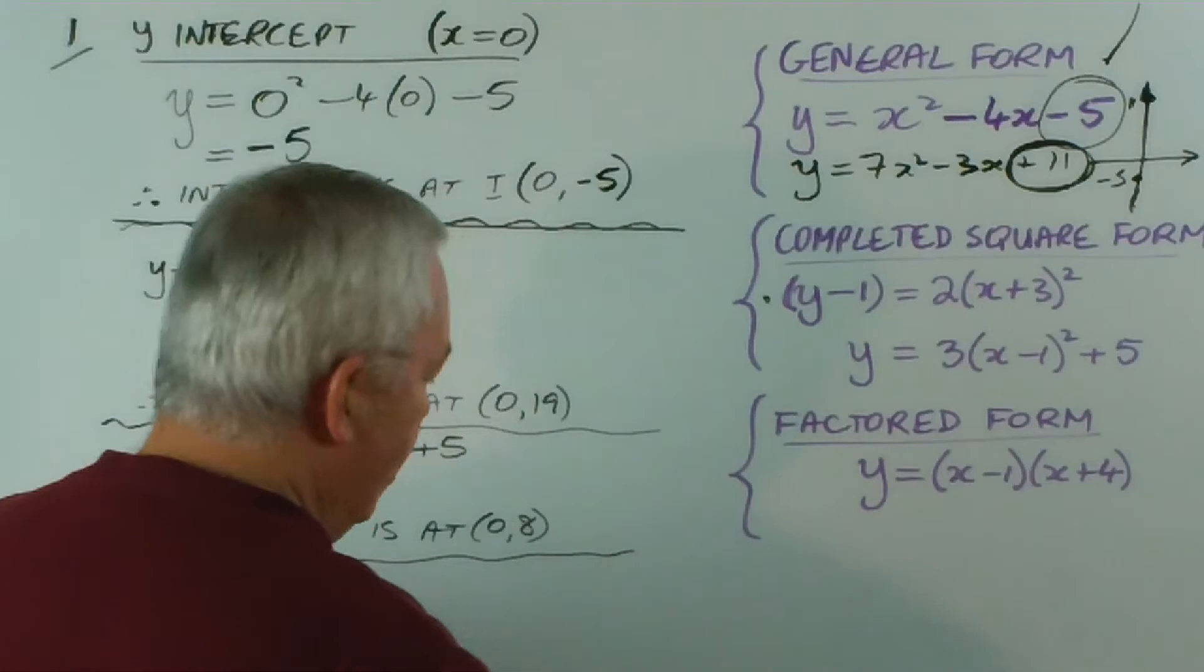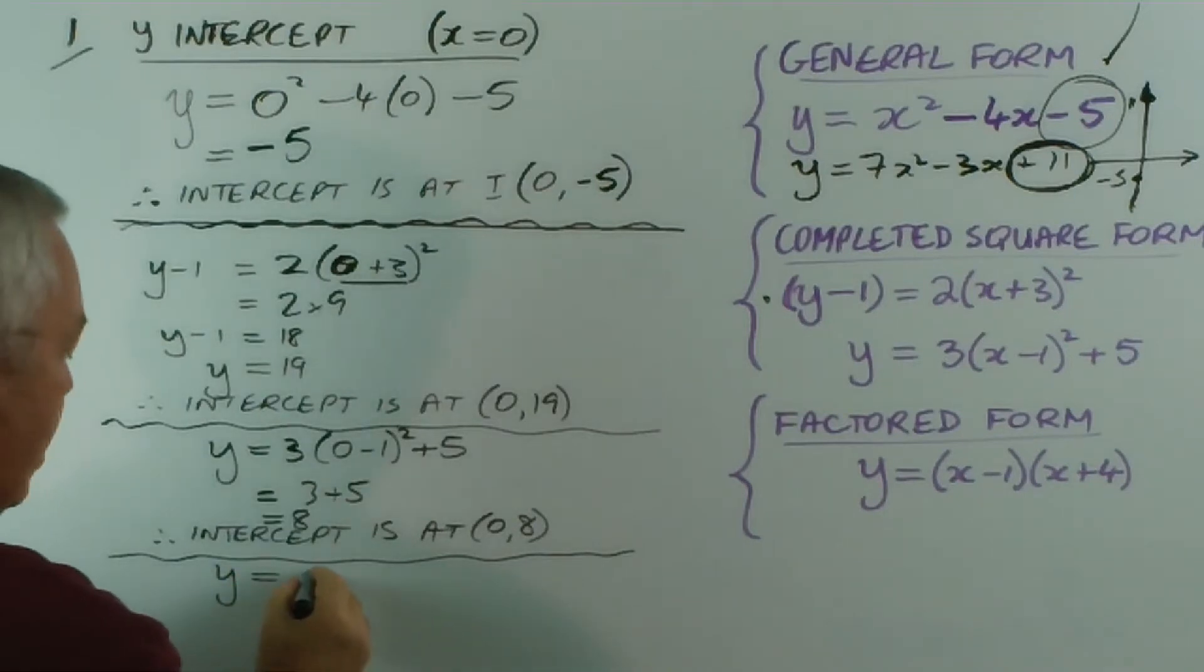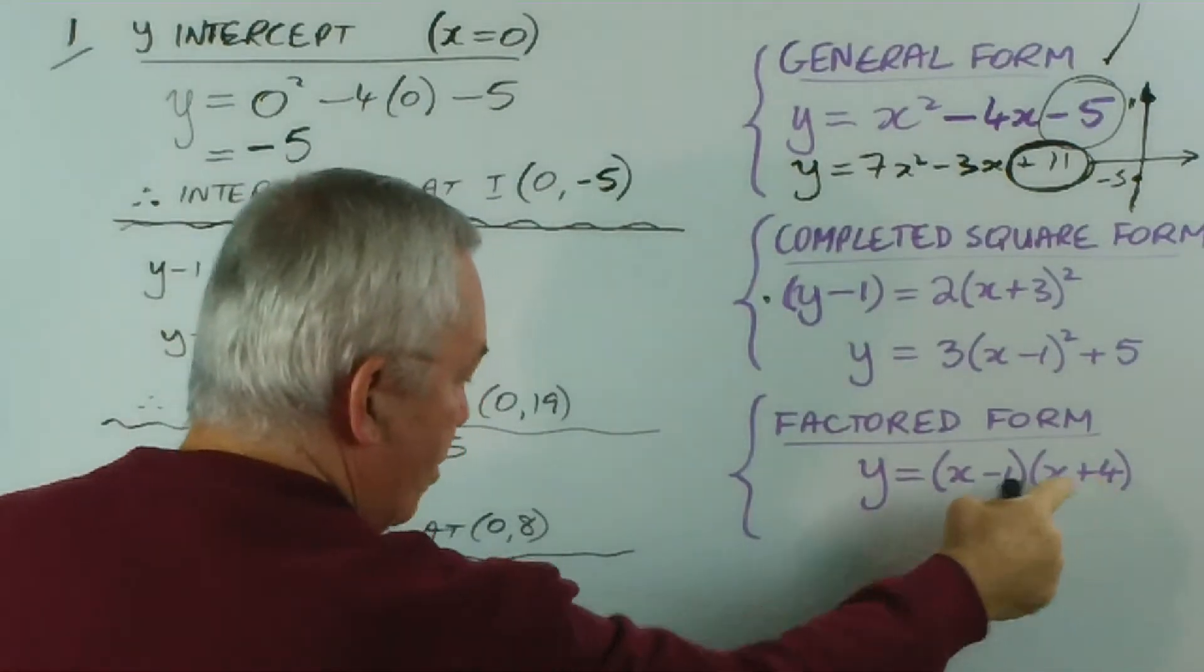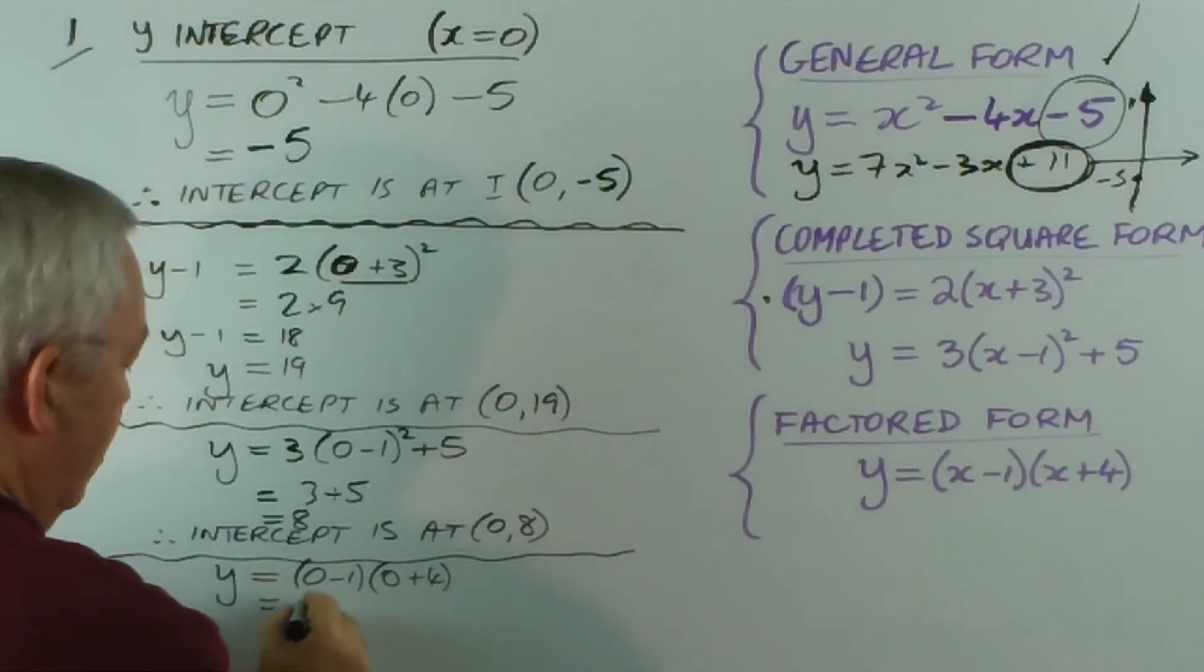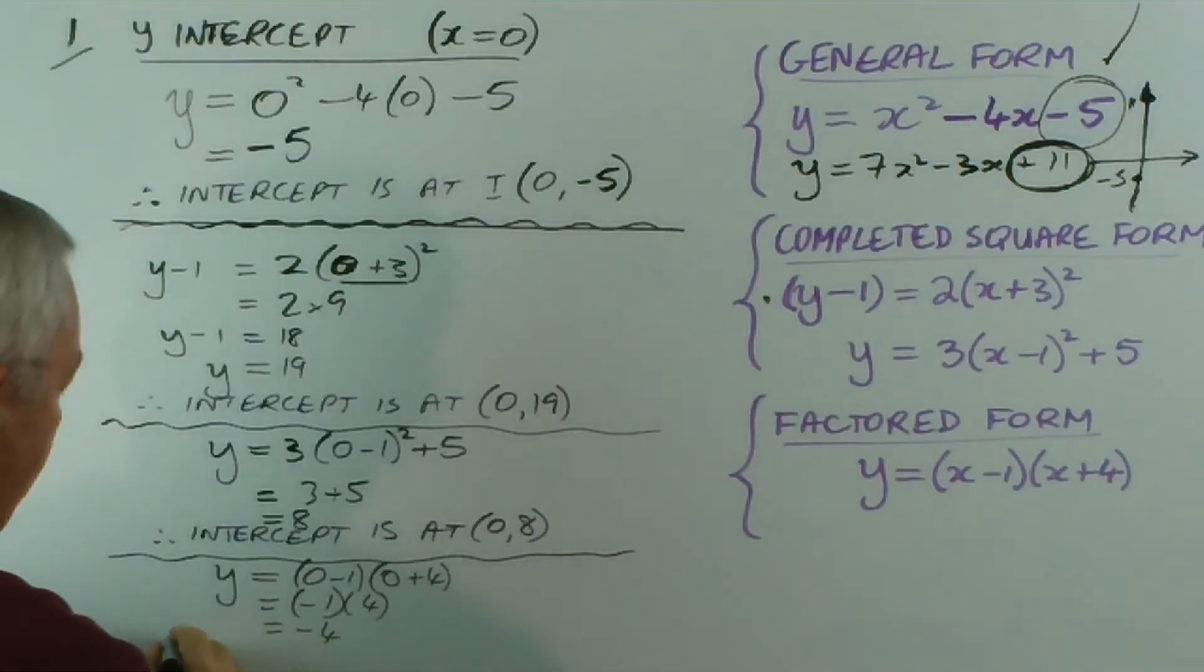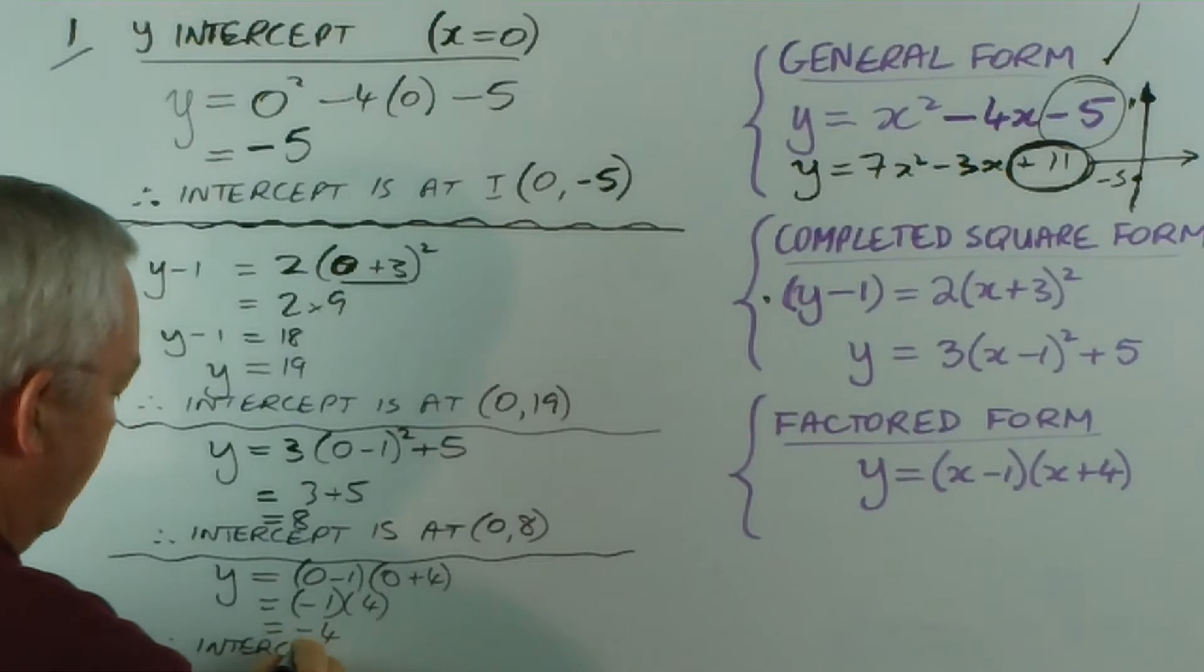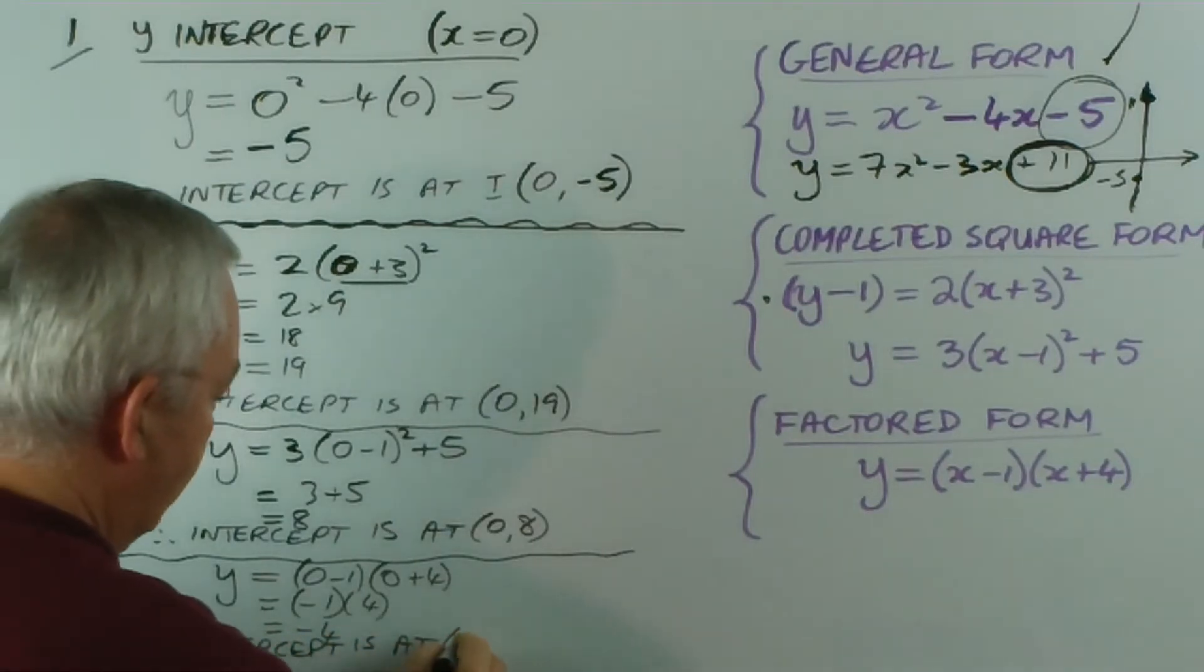So in this case the intercept is at 0, 8. I am squeezing things in because I'm running out of room. And the last one is the factored form. We would substitute 0 and have 0 minus 1 times 0 plus 4, which is minus 1 times 4, which is minus 4. So we say therefore the intercept is at 0, minus 4.